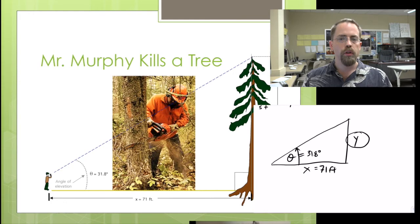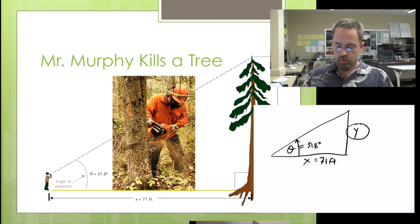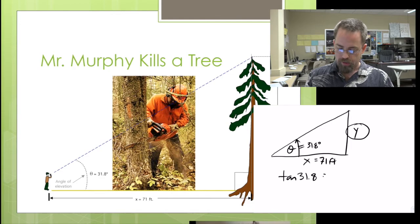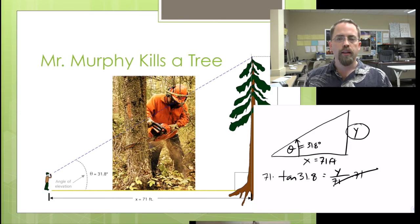So, what trig function, SOHCAHTOA, involves knowledge of opposite and adjacent? Well, it's tangent. So, what we're going to say is that tangent of this angle of 31.8 equals opposite over adjacent. Now, how can we determine how tall this tree is? Well, all we have to do is take tangent 31.8 and multiply by 71. So, multiply both sides by 71. That cancels, and you can find the height of the tree.